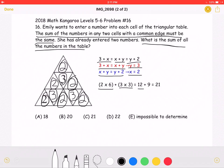which would give us 12 plus 9, which is equal to 21. This is answer choice C.